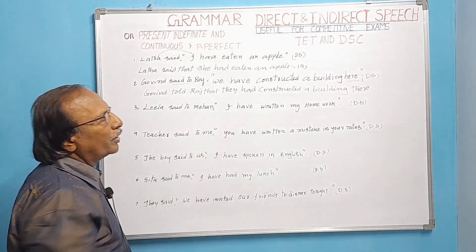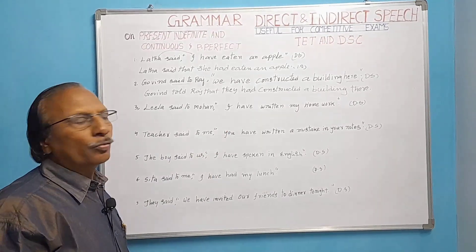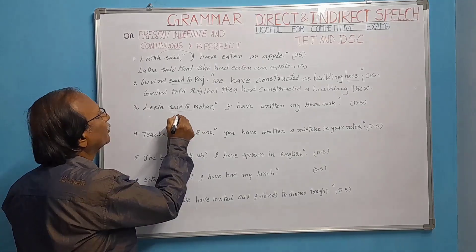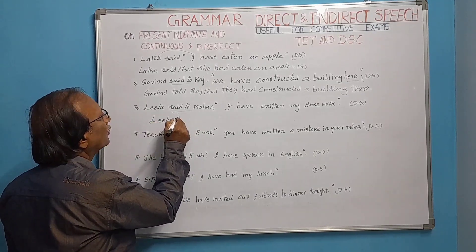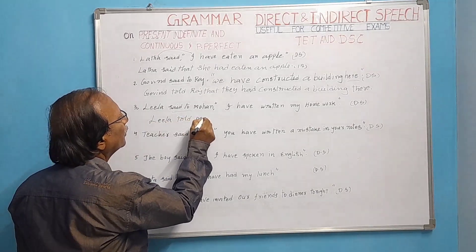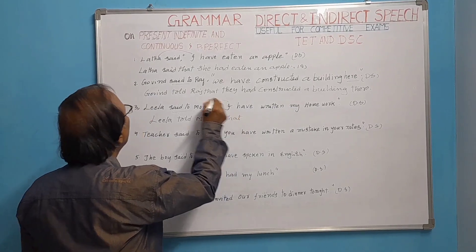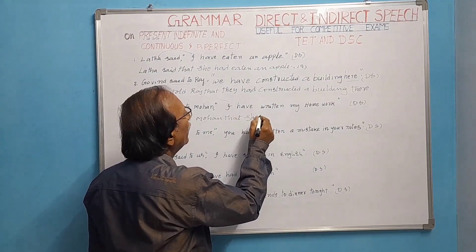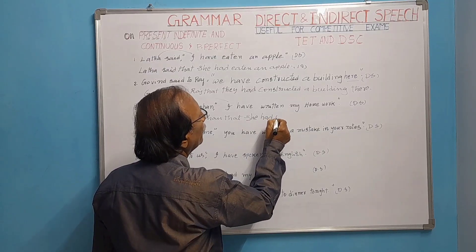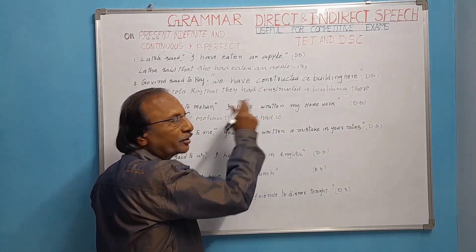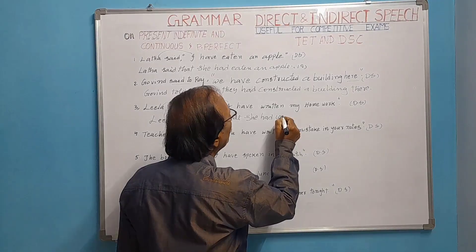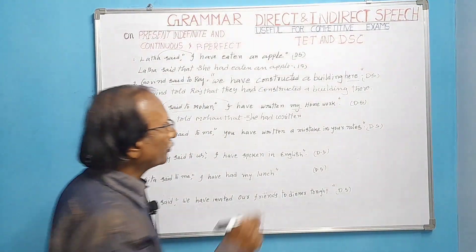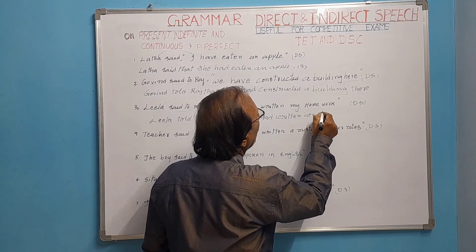Lila said to Mohan, 'I have written my homework.' 'Said to' becomes 'told': Lila told Mohan. We add 'that.' 'I' refers to Lila, so the subject becomes 'she.' 'Have written' changes to 'had written' — the V3 'written' does not change. 'My' refers to Lila, so it becomes 'her.' Result: Lila told Mohan that she had written her homework.